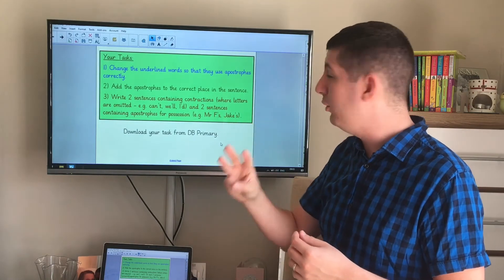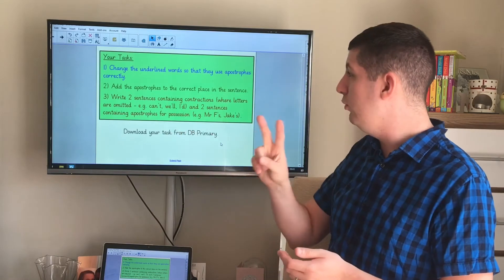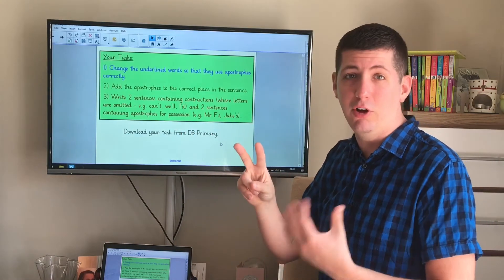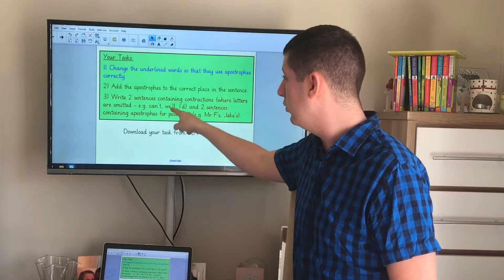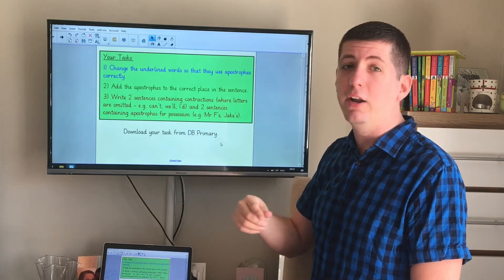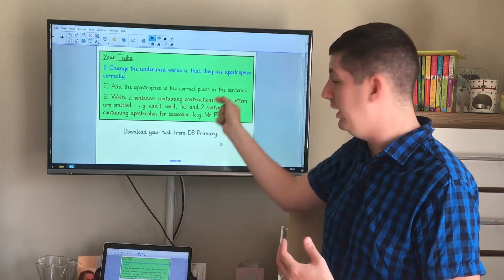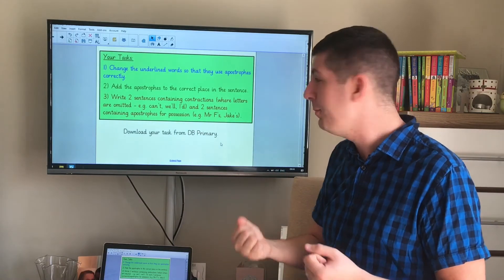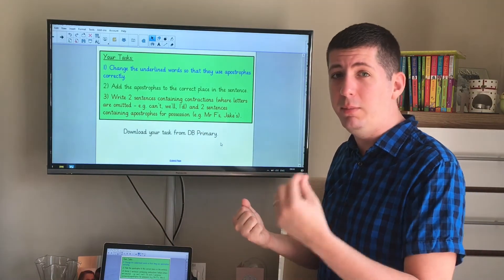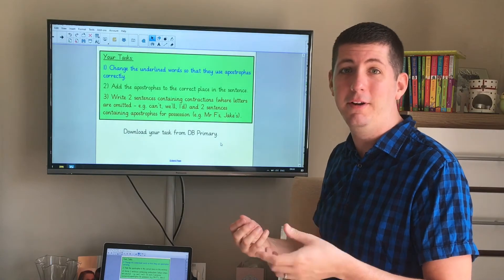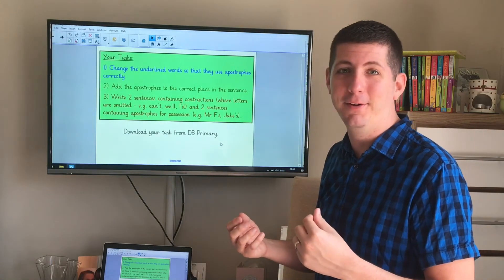And finally for task number three I'd like you to see if you can write two sentences containing contractions, which are omitted letters like can't, will, I'd, and I'd like you to write two sentences containing apostrophes for possession. For example Mr. F's or Jake's, belongs to somebody. When you finish that, come back to DB primary, oh sorry not come to DB primary, come back here and we'll have a look at the answers together.